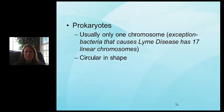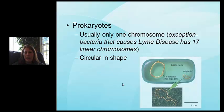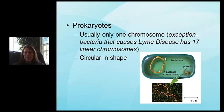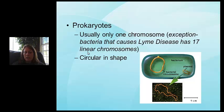Prokaryotes usually have only one chromosome, and it is circular in shape. Here's a general image of a bacterium showing the bacterial chromosome making a ring or circular shape. There are exceptions — the bacteria that causes Lyme disease has 17 chromosomes, and they are linear in shape, which means they look a lot like eukaryote chromosomes.